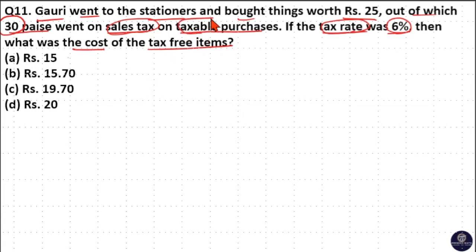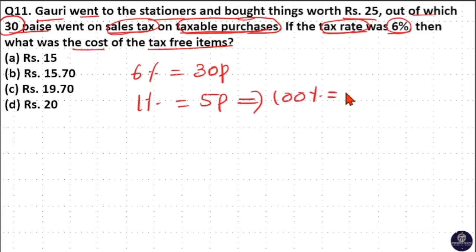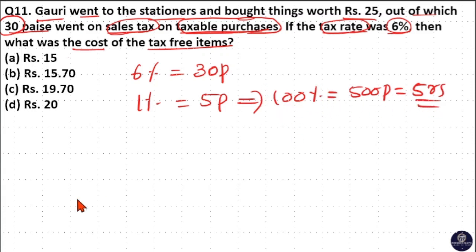The cost of taxable item is 100% of this. If 6% is 30 paise, then 100% is the cost of taxable purchases. 6 goes 5 times in 30, so 1% is 5 paise, and 100% is 500 paise which is equal to 5 rupees. So cost of taxable item is 5 rupees.